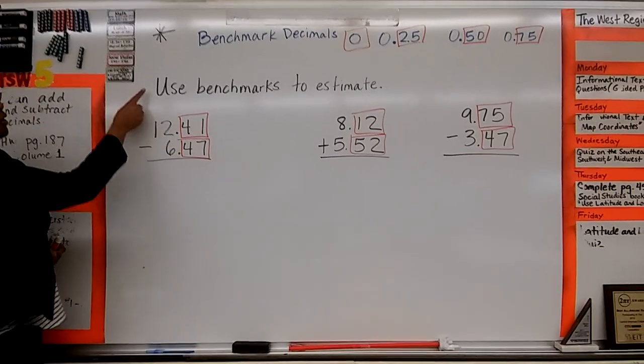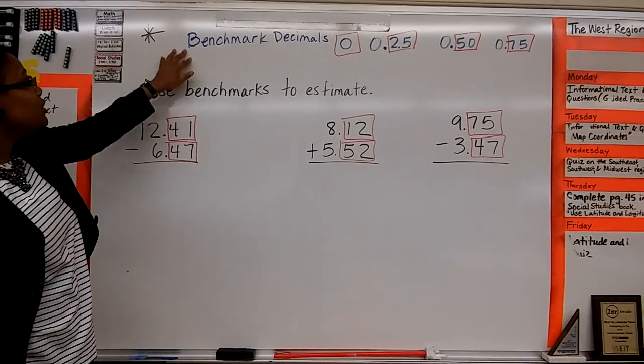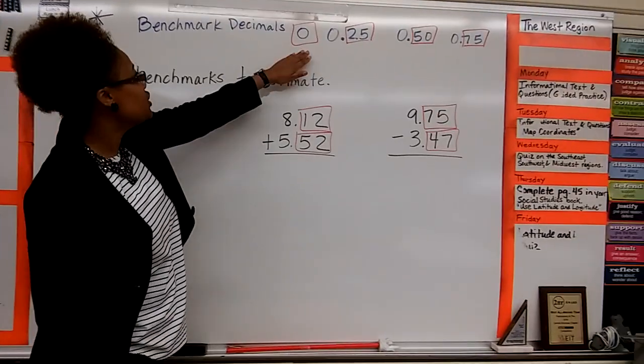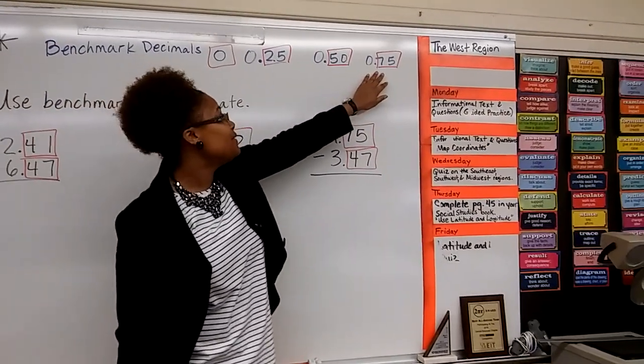All right, so today we'll be using benchmarks to estimate, and we're going to do a quick review of our benchmark decimals, which is 0, 25 hundredths, 50 hundredths, and 75 hundredths.